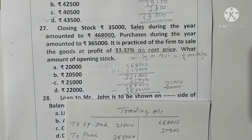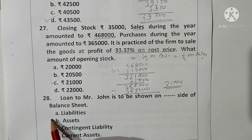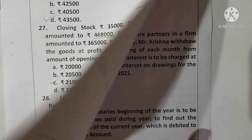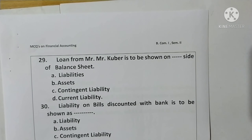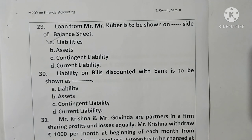Question 28: Loan to Mr. John is to be shown on the asset side of the balance sheet. Option B is correct. Question 29: Loan from Mr. Kuber is to be shown on the liabilities side of the balance sheet. Option A is correct. Question 30: A liability bill discounted with a bank is to be shown as a contingent liability. Option C is correct.